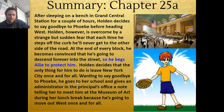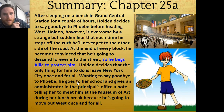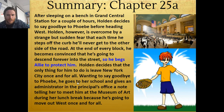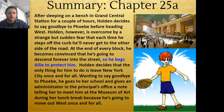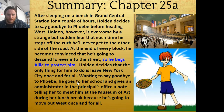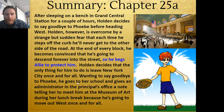Chapter 25. After sleeping on a bench in Grand Central Station for a couple of hours, like Chris McCandless, Holden decides to say goodbye to Phoebe before heading west. However, he is overcome by a strange but sudden fear that each time he steps off the curb, he'll never get to the other side of the road. At the very end of the block, he becomes convinced that he's going to descend forever into the street. So he begs Allie, his dead brother, to protect him. Holden decides that the only thing for him to do is leave New York City once and for all. Wanting to say goodbye to Phoebe, he goes to her school and gives an administrator in the principal's office a note telling her to meet him at the Museum of Art during her lunch break, because he's going to move out west.